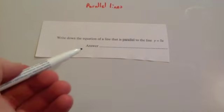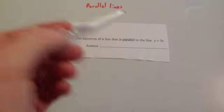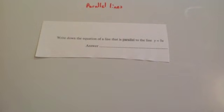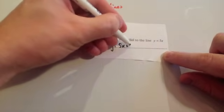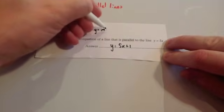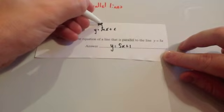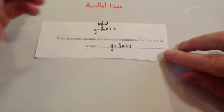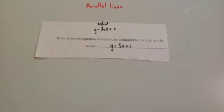Here's a typical exam question. It says: write down the equation of a line that is parallel to the line Y equals 5X. This line has got a gradient of five. So as long as we give another equation with a gradient of five, it's going to be parallel to it. You could have Y equals 5X plus one, because the gradient is five and the Y-intercept is one. Remember Y equals MX plus C — as long as you have a gradient of five, it's parallel. So you could have 5X plus one, 5X plus two, 5X plus 0.7, or Y equals 5X subtract two — any of those.